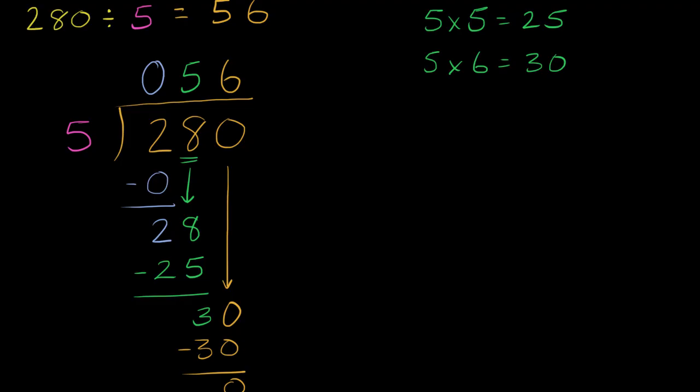And there was no other things in the ones place here, so we just had to figure out how many times does five go into 30. So hopefully that gives you a sense of what's actually happening behind this little process. It's not just magic. We're really just keeping track of place value here.